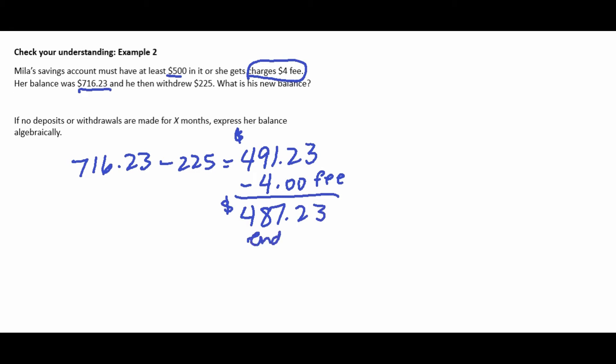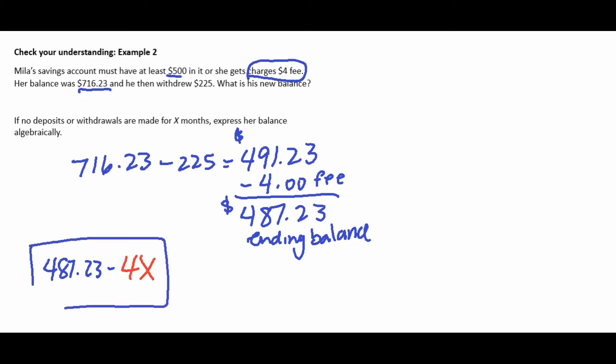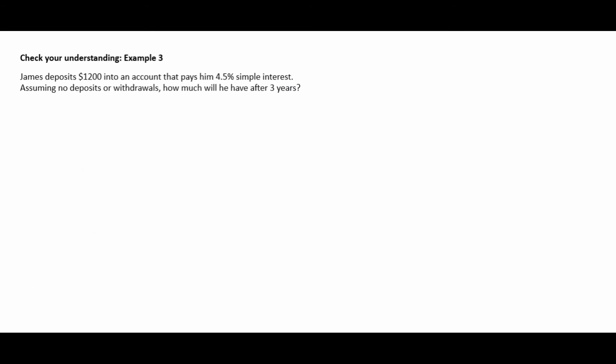The checking-for-understanding question asks: if no deposits or withdrawals were made for x months, express her balance algebraically. Since she'll be charged $4 each month she stays below the minimum, we multiply $4 times x months and subtract from her balance. The algebraic expression is: $487.23 − 4x.